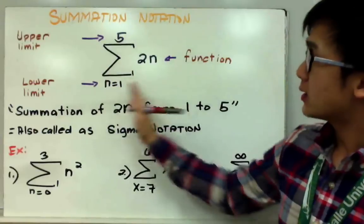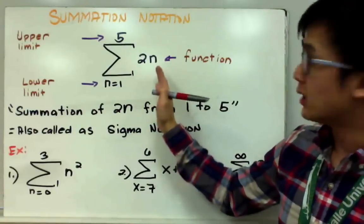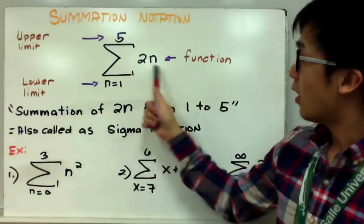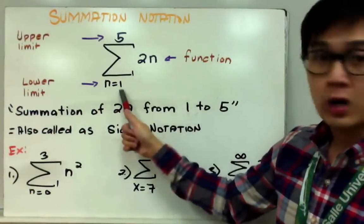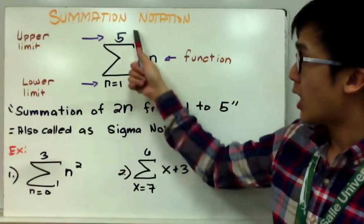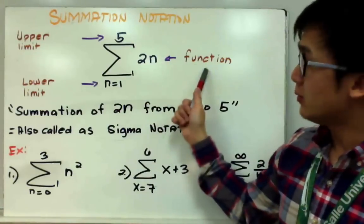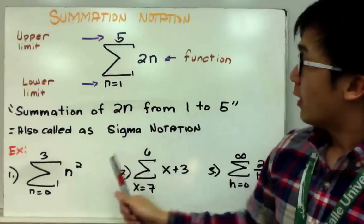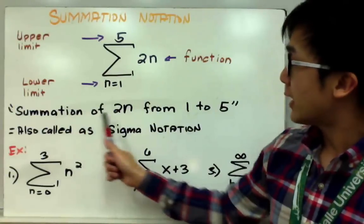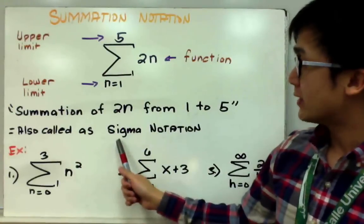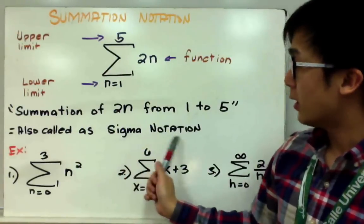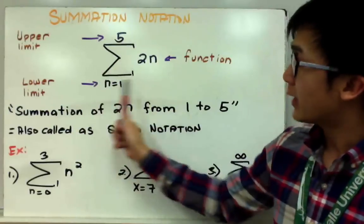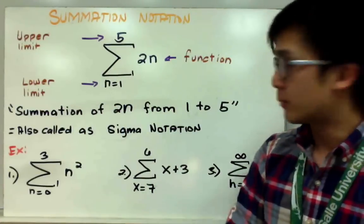To read the summation notation, it is simply read as the summation of 2n from 1 to 5 — where 2n is your function, 1 is your lower limit, and 5 is your upper limit. The summation notation is also known as sigma notation because this symbol is the Greek letter sigma.